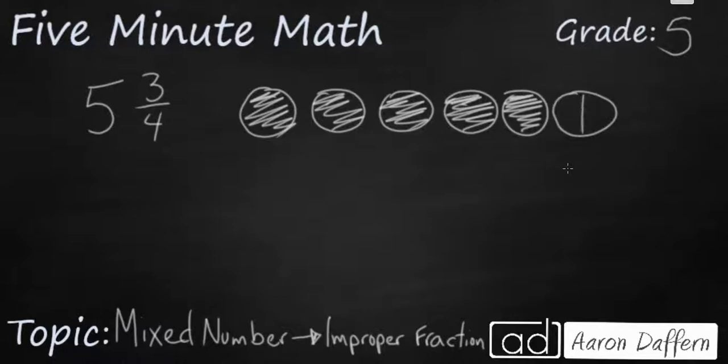So if I want to write this mixed number 5 and 3/4 as an improper fraction what I need to do is I need to look at each of my wholes as fractions. Since we're dealing with fourths let's cut each of these up into fourths.